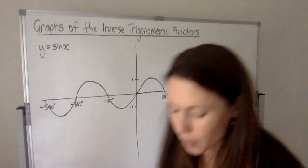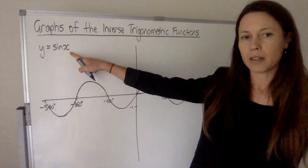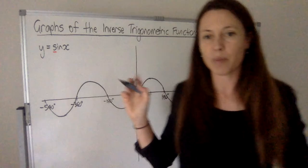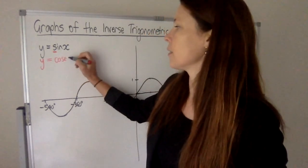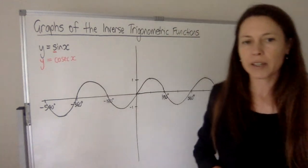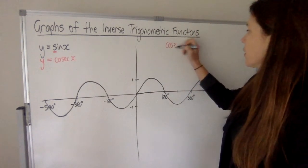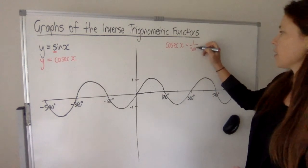Alright, so if we go to graph the inverse trig function that's associated with sine - now, which one is that? Remember we use the s to remember the third letter, and that is cosec x. Remember what cosec x is.